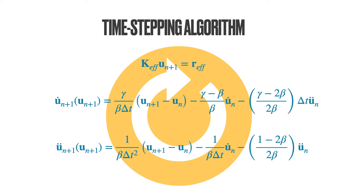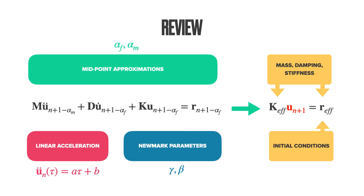So, given the mass matrix, the stiffness matrix, and the damping matrix, and by specifying the parameters alpha-m, alpha-f, beta, and gamma, and given the displacements, velocities, and accelerations at the previous time step, we can compute the new displacement at time step n+1. Given the displacement at n+1, we can compute the velocity at n+1 and the acceleration at n+1. These new quantities can then be used to compute further quantities in future time steps. In a typical simulation, in a loop, we compute these three expressions for each time increment. We don't need any special starting procedure like the central difference scheme.